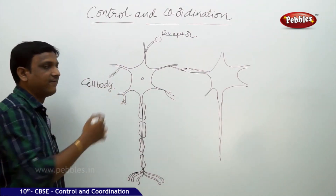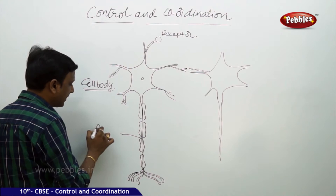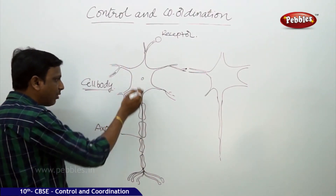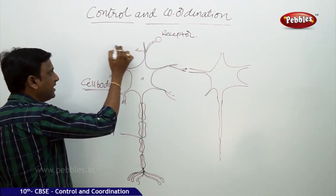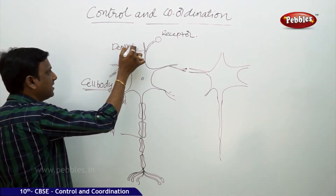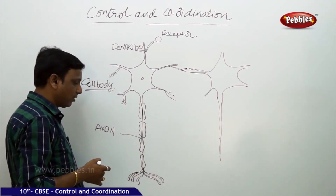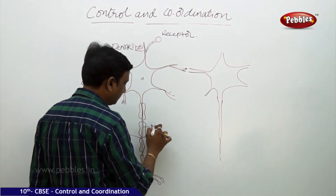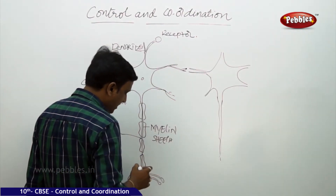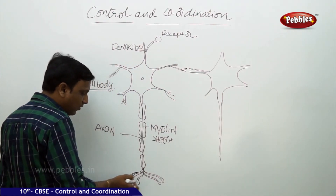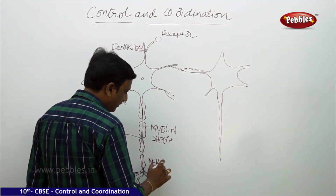Before we see how it functions, let us discuss the shape and different parts of the nerve cell. This long extension is called the axon. The cell body has got many short extensions called dendrites. The long extension is the axon, and it is covered by a protective myelin sheath. The nerve cell ends at a point; these are called the endings of the nerve cell, or nerve terminals.